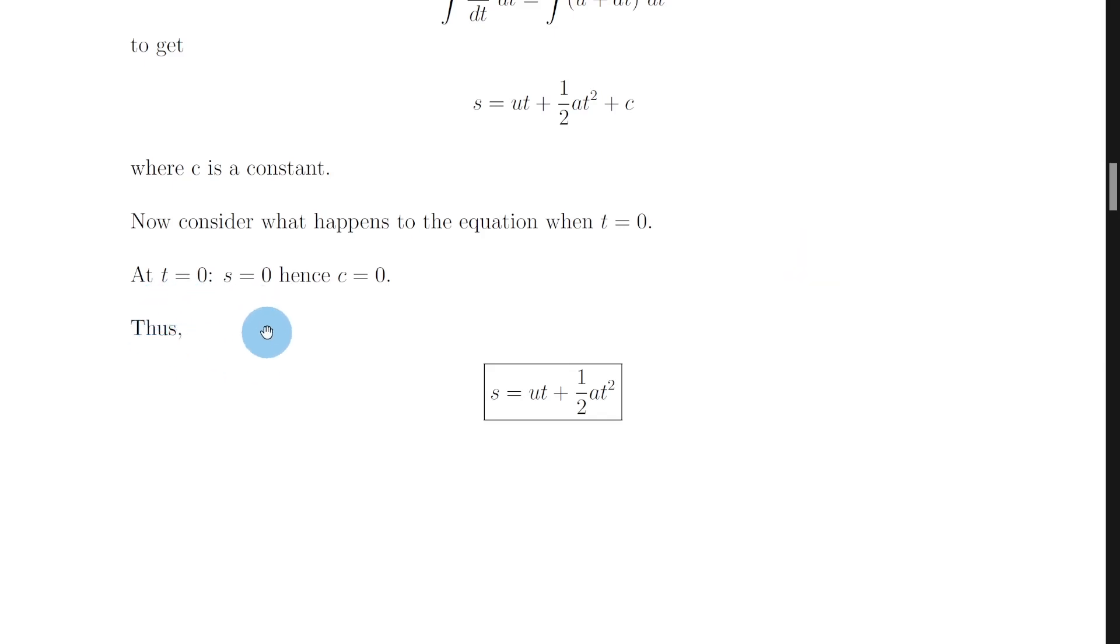So at a time t equals 0 the object hasn't started moving yet so its displacement s must be equal to 0 as well. And that means if we plug in t equals 0 into this expression we get s is equal to c since these two terms become 0. But we just said that s is equal to 0 at t equals 0 so that means that c must also be equal to 0.